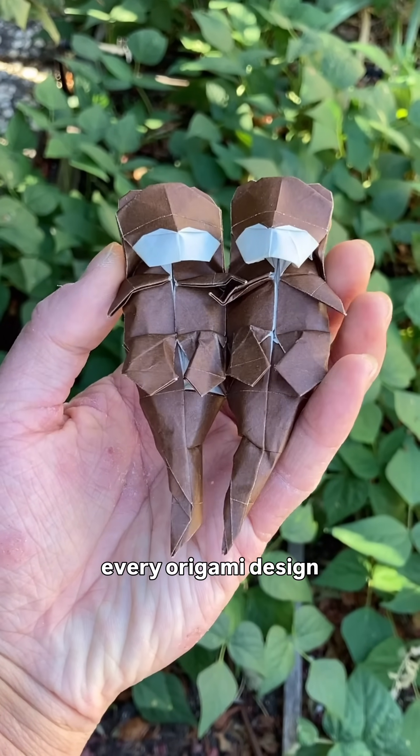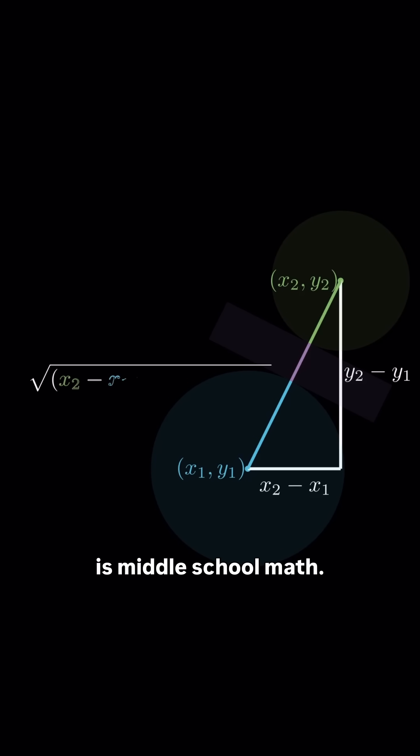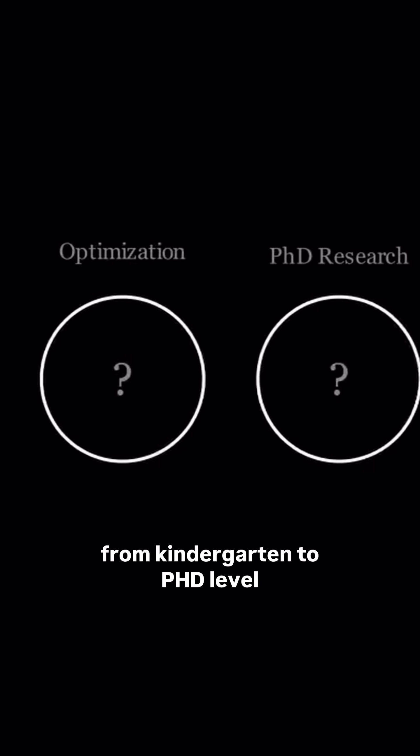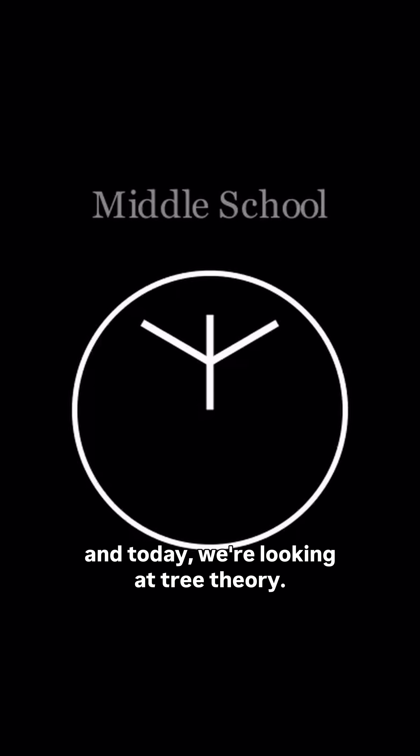There is an equation that governs every origami design, and all you need to understand it is middle school math. It's day three of learning the math behind origami from kindergarten to PhD level, and today we're looking at tree theory.